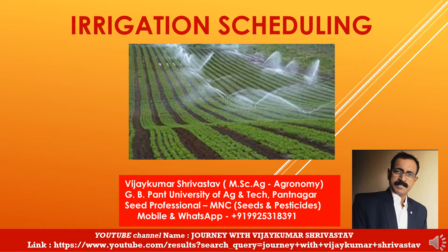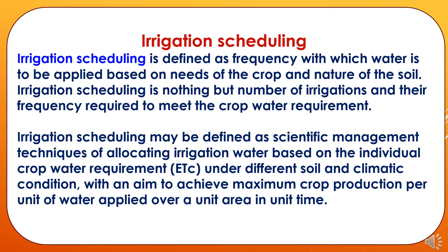Presently working as a seed professional in one of the MNCs associated with seeds and pesticide group. Irrigation scheduling is defined as the frequency with which water is to be applied based on the needs of the crop and nature of the soil. It is the number of irrigations and their frequency required to meet the crop water requirement. It may also be defined as a scientific management technique of allocating irrigation water based on individual crop water requirements under different soil and climatic conditions, with an aim to achieve maximum crop production per unit of water applied over a unit area in unit time.